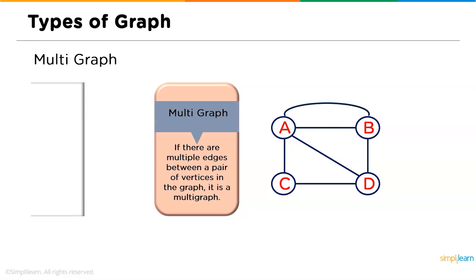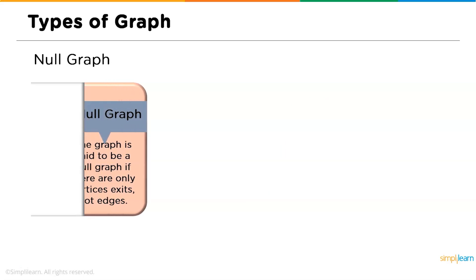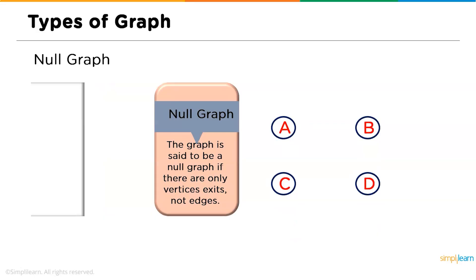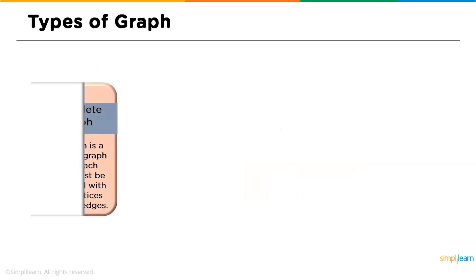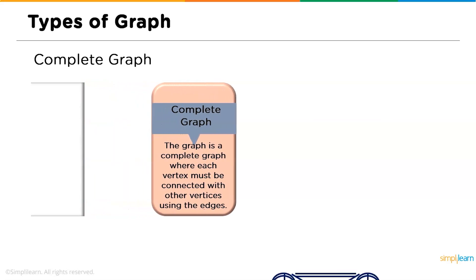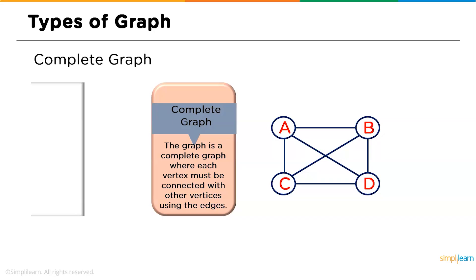Followed by multi graph we have the null graph: a graph is said to be null if there are only vertices and no edges between them. Unlike trivial graph which has just one vertex, a null graph has multiple vertices but no edges. Next is the complete graph: a graph is called complete where each vertex must be connected to every other vertex using at least one edge — so A is connected to B, C, and D, and similarly all other vertices are connected to each other.